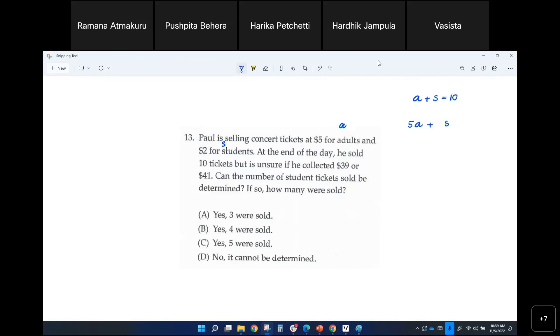there are s number of student tickets and each one is selling at $2, so you multiply by 2. So 2s is the amount of money that Paul will raise by selling s number of student tickets.